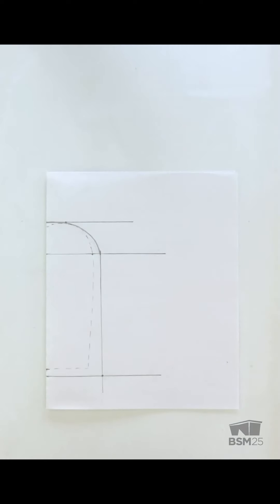To finish off the bottom of the vamp pattern, we're going to draw a nice curved line from our dashed line here all the way to this corner where our lines intersect.